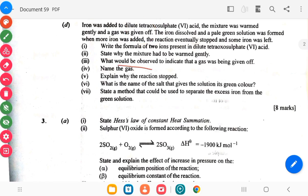What will be observed to indicate that the gas was being given off. Name the gas. Explain why the reaction stopped. What is the name of the salt that gives the solution its green color? State the method that could be used to separate excess ion from the green solution.